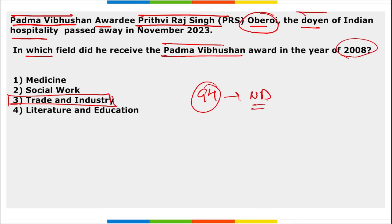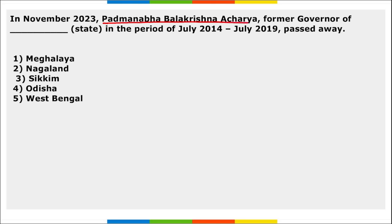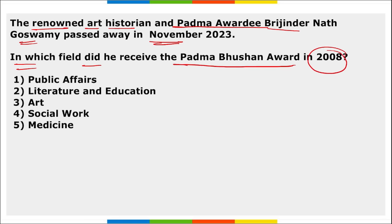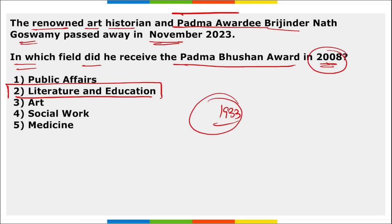PB Acharya — former Governor of Nagaland from July 2014 to July 2019 — recently passed away. Brijendranath Goswami — renowned art historian and Padma awardee — passed away; he received Padma Shri in 1998 and Padma Bhushan in 2008, both in the field of Literature and Education. He was born in 1933 in Punjab Province, Pakistan.